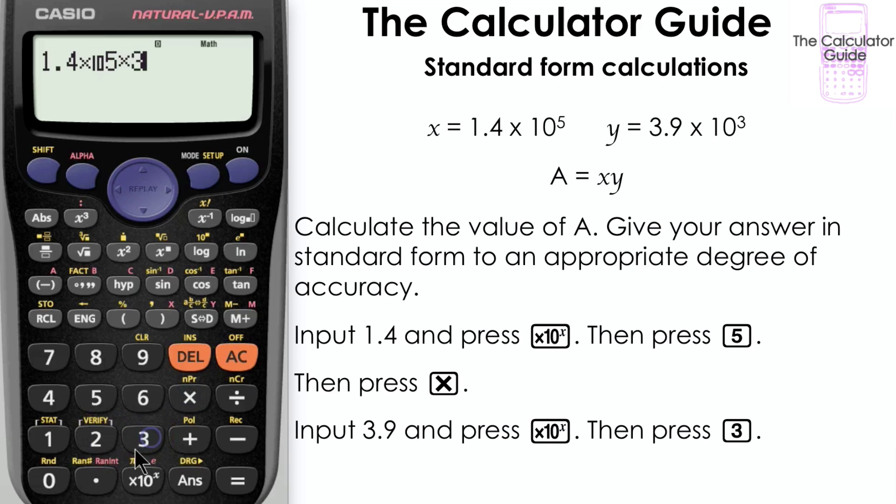Press times to multiply and then we'll input the value for y, 3.9 times 10 to the x and this time 3. And then finally press equals.